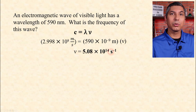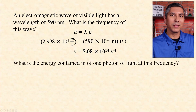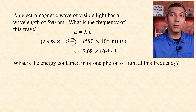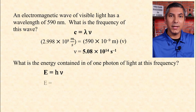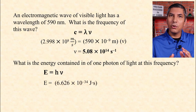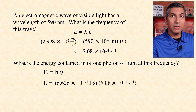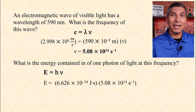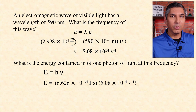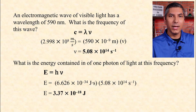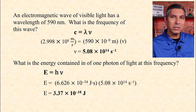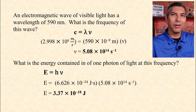Hertz is often written as reciprocal seconds. What is the energy contained in one photon of light at this frequency? Using E = hν: h is Planck's constant and ν is 5.08 × 10¹⁴ Hz. We find that one photon of light at this frequency has an energy of 3.37 × 10⁻¹⁸ joules. That's a very small number, because one photon is an unimaginably small amount of energy.